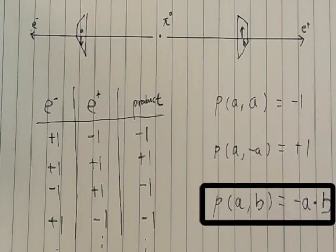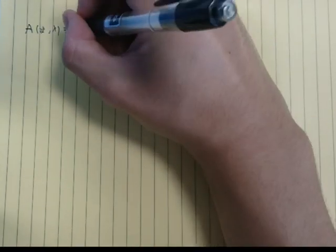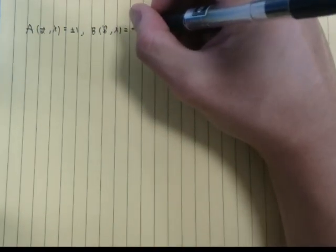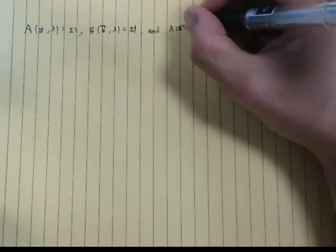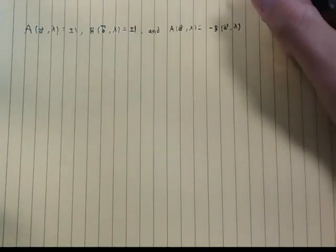We can now generalize that the average value of P is now the negative of the dot product between A and B. Bell's argument was simple: assume a local hidden variable lambda exists. Some function A with arguments vector A and lambda exist and gives the result for the electron measurement. Now some other function B with arguments vector B and lambda also exist. Both functions take the value positive or negative 1.